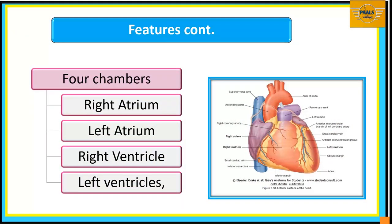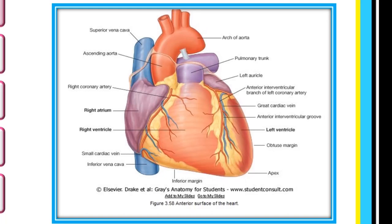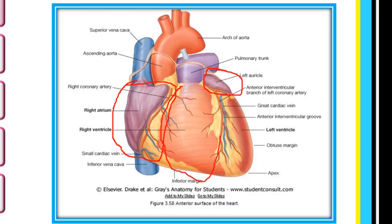In the chambers, we have four chambers. Here in this picture, we can see the right atrial chamber, and we can see a little of the left atrial chamber. On the anterior surface, here is the right ventricle, and the little part we're seeing here is the left ventricle. So we have these four chambers of the heart: the right and left atrial chambers, and the right and left ventricular chambers.